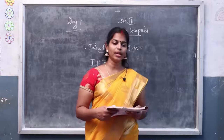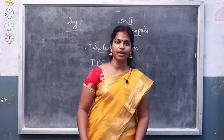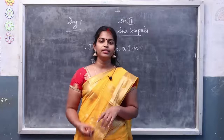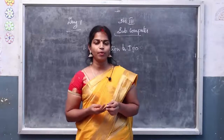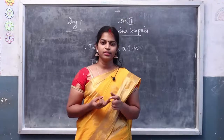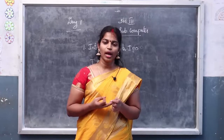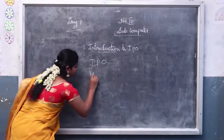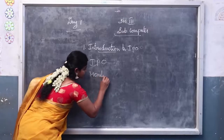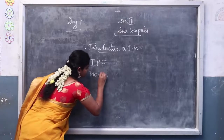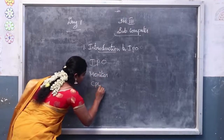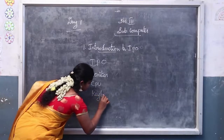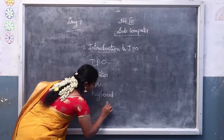A computer has 4 main parts: monitor, CPU, keyboard, and mouse.